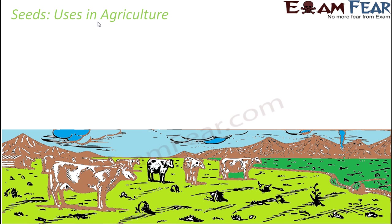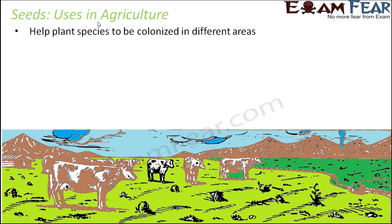We just can't think of agriculture without seeds. Seeds help plant species to be colonized in different areas because seeds are very small, portable, and can be carried from one place to another. They get dispersed easily to new habitats, and wherever you put them, if sufficient water and proper environmental conditions are present, they give rise to new plants.